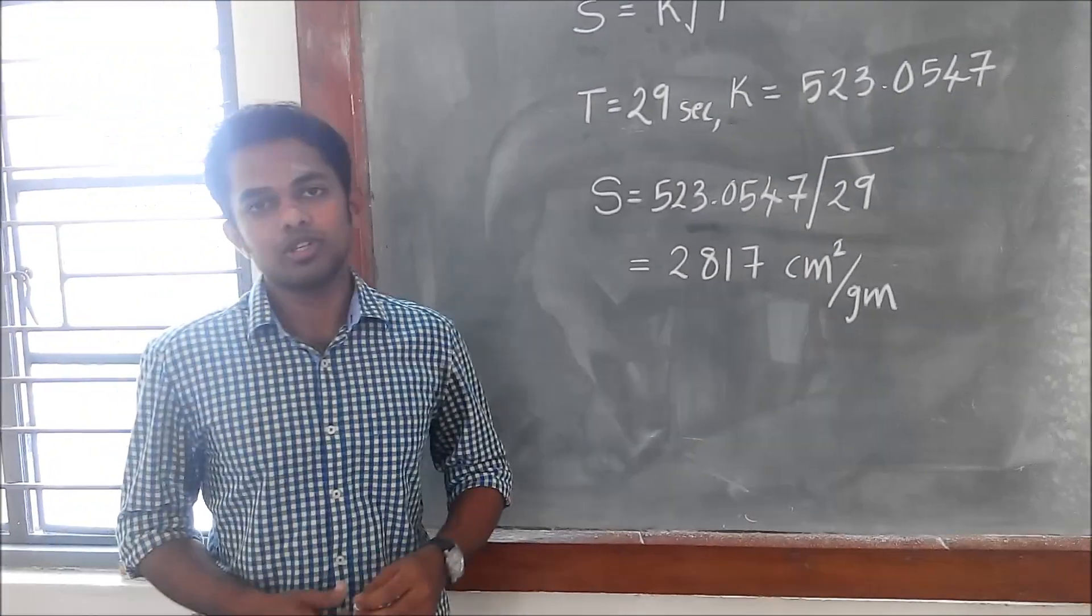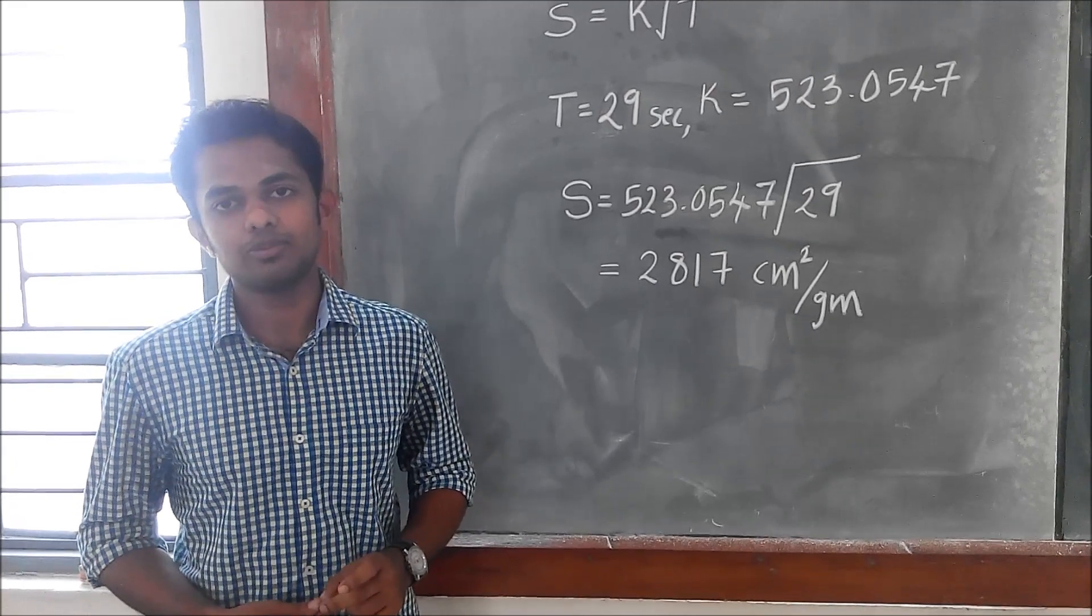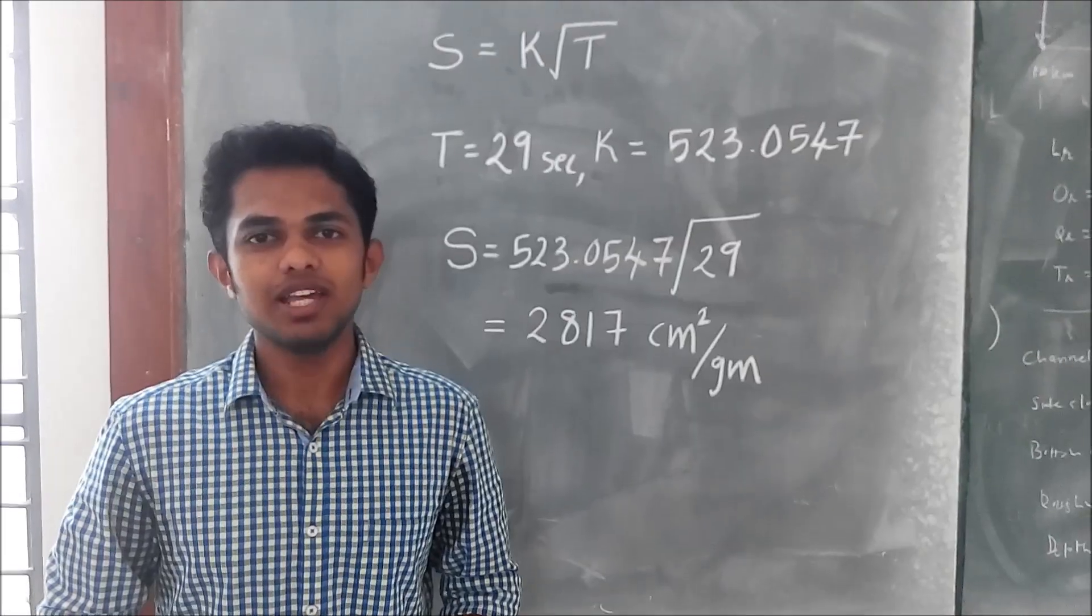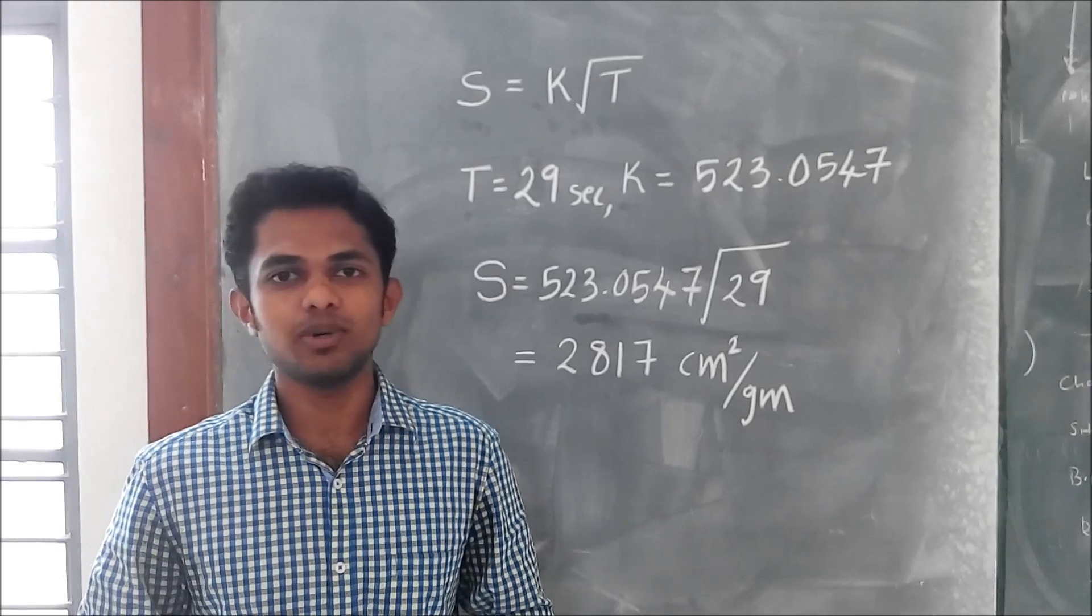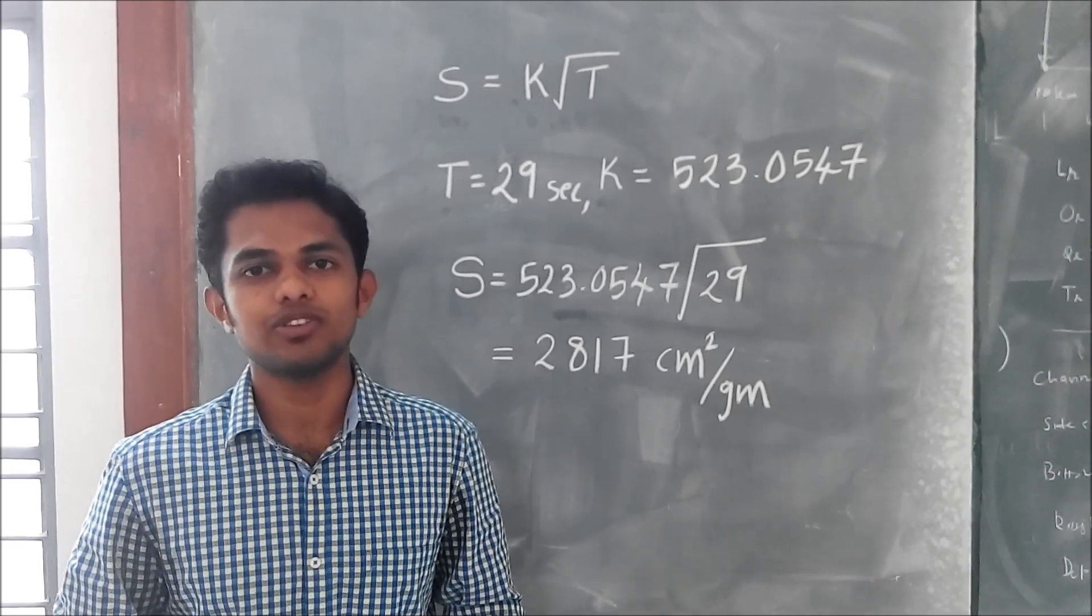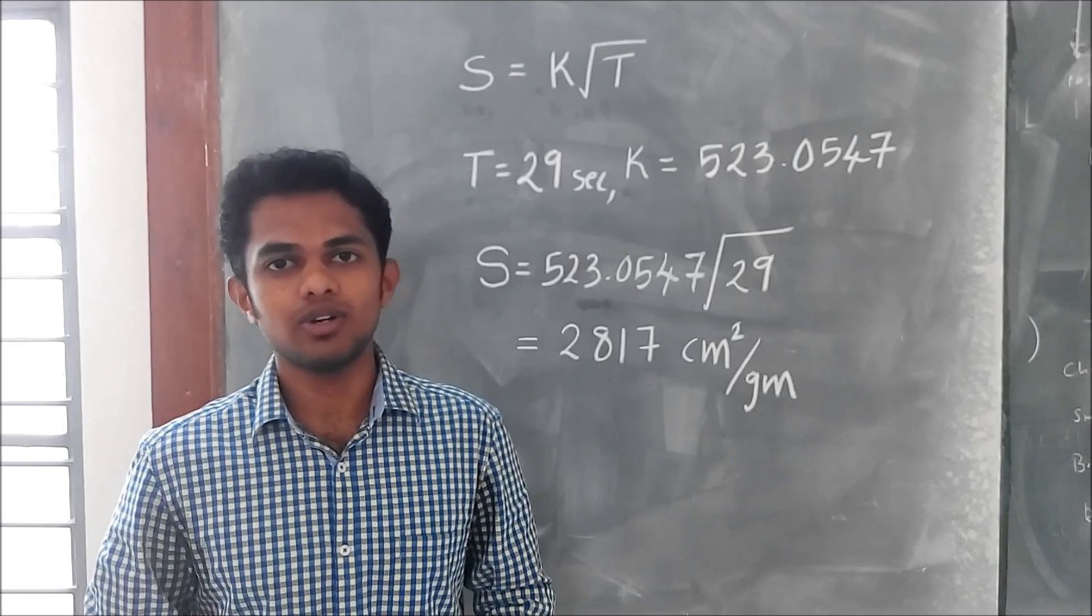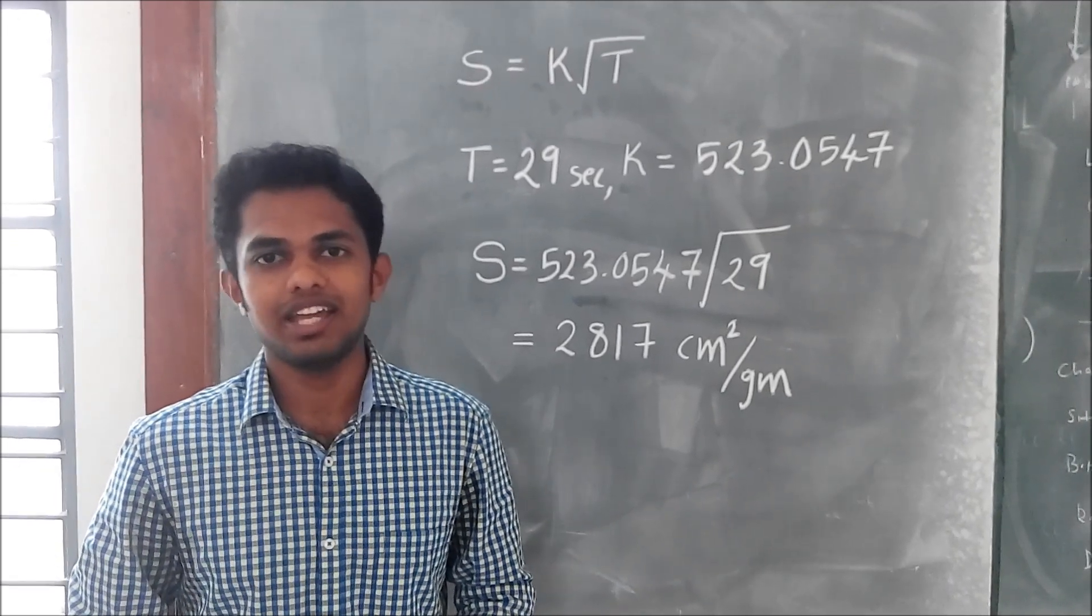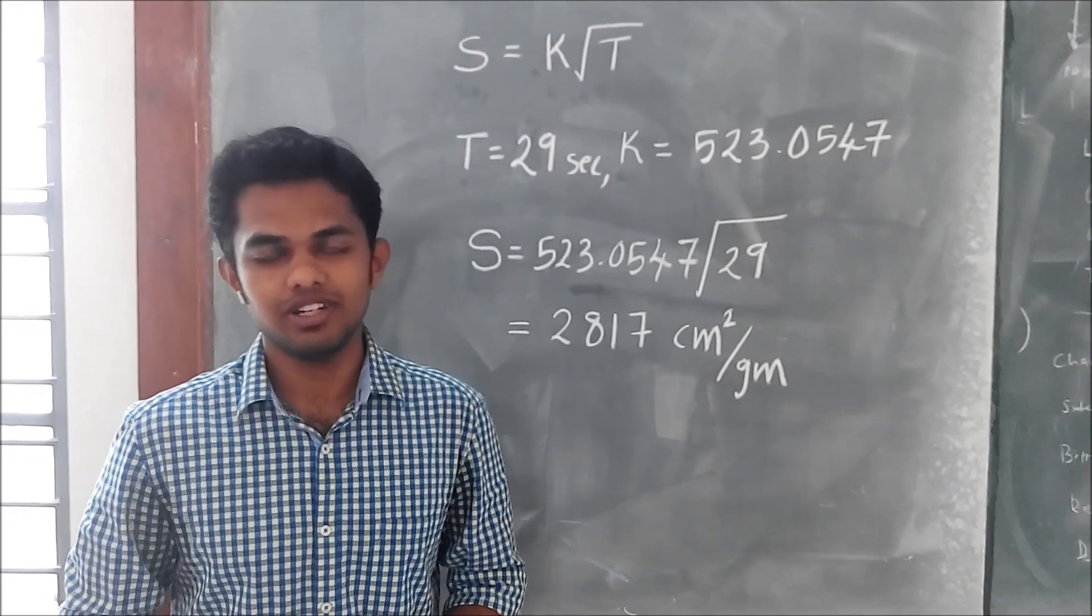Minimum of three observations has to be taken to find out the average specific surface area. Blaine's air permeability test is important since it gives an idea about the smaller grain particles which plays an important role in the hydration of cement and subsequent strength development. Thank you.